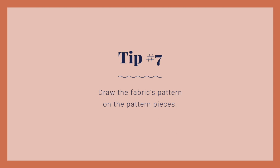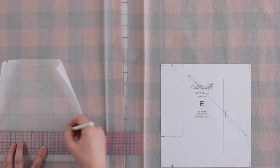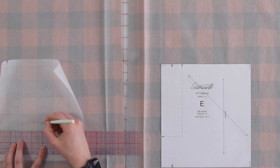Tip number seven, draw the fabric's pattern on the pattern pieces. Use a soft lead pencil to trace the images that are on the fabric onto the paper pattern. This is especially helpful for the next tip.